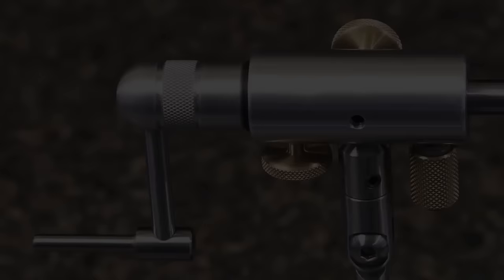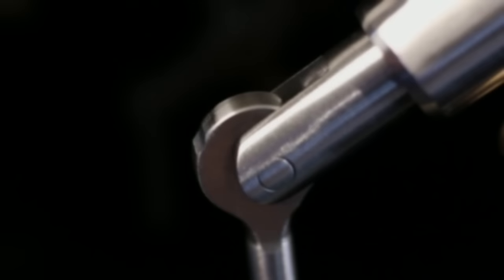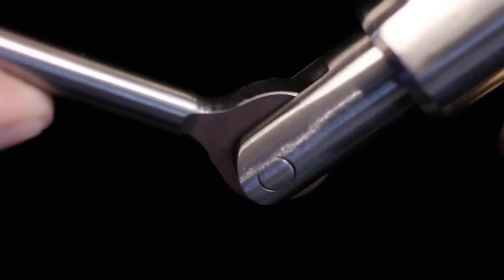Here's how the vise works. A cam handle closes the jaws when raised to the up position and opens them when lowered. A small detent in the cam clicks smartly into place when the jaws are closed.